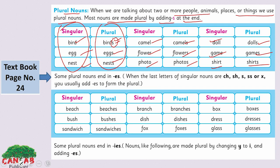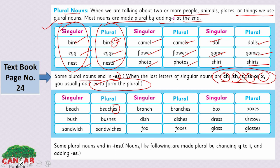Now look at another way of changing from singular to plural. Some plural nouns end in ES when the last letters of singular nouns are SH, S, CH, SS, or X — you usually add ES to form the plural. Like: beach → beaches, bush → bushes, sandwich → sandwiches, branch → branches, dish → dishes, fox → foxes, box → boxes, dress → dresses, glass → glasses.